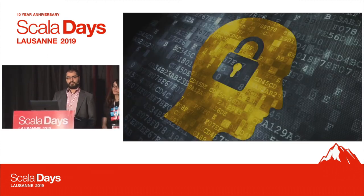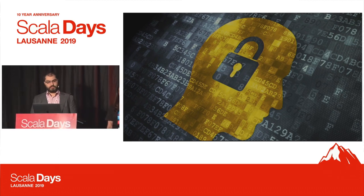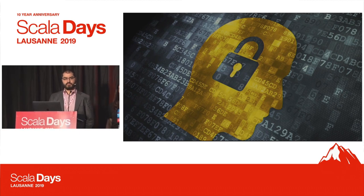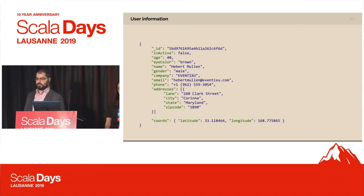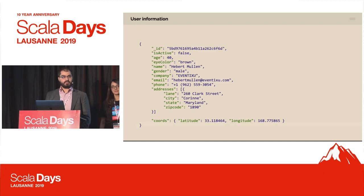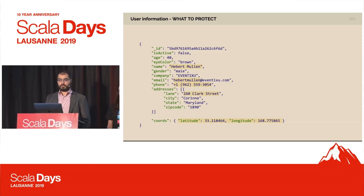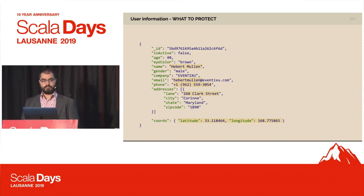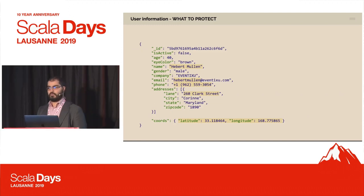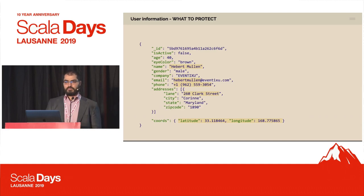So what are we talking about? We are talking about user information — protecting users' data. This is especially important in the European Union with the GDPR agreement. Here's an example of a piece of data with a few fields. Some would be considered user information worth protecting — the name, email, phone number, address, lane, and maybe the last position we saw the person. The goal is to have a clear sense about which kind of data you can divulge and which kind you need to anonymize.